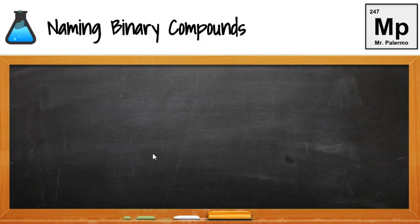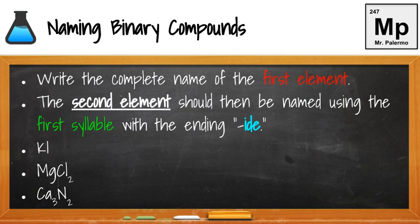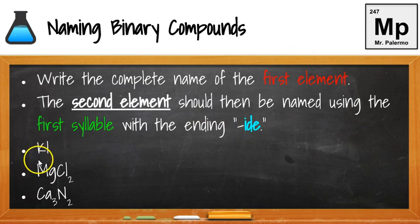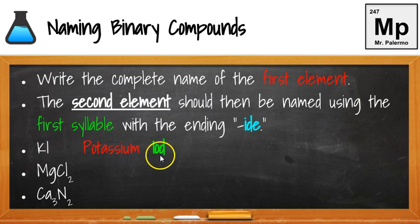How do we name binary compounds? First, write the complete name of the first element — that's the cation, the positive ion. The second element is the negative ion, the anion, and we use the first syllable of that element then add "-ide." So K is potassium, and iodine — we take the first syllable "iod" and add "-ide" — giving us potassium iodide.